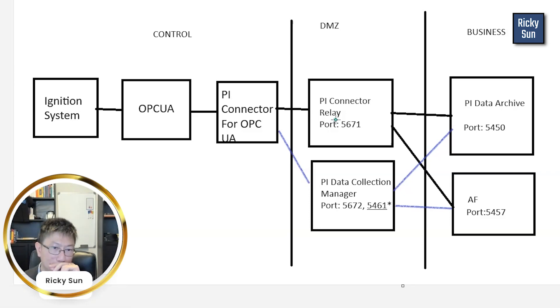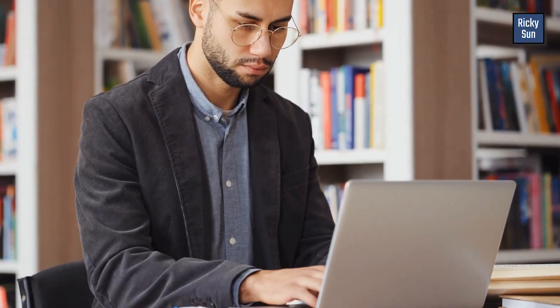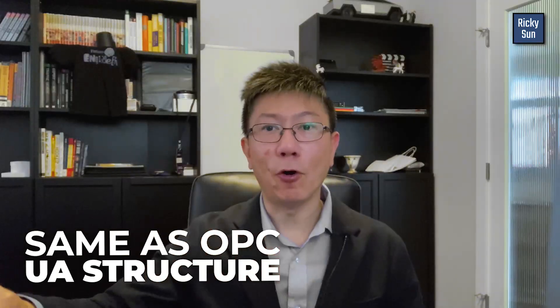Let's talk about the characteristics of the PI connectors for OPC UA. When I was reading the manual and doing research to provide my customer the best possible opinion — because the architecture and requirements are dynamic, we need to know all the options to support our clients. PI connectors allow you to create an AF structure in your AF server, and I want to point out it's exactly the same as your OPC UA structure. When you do that, you replicate that structure to your AF server.